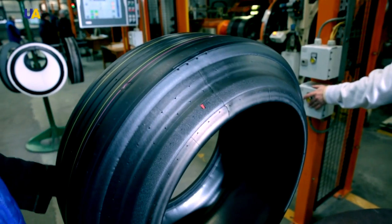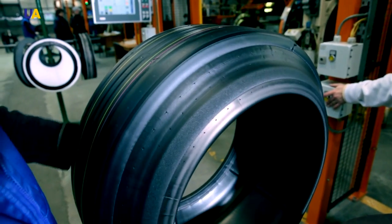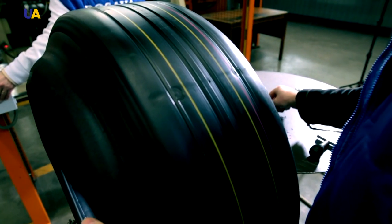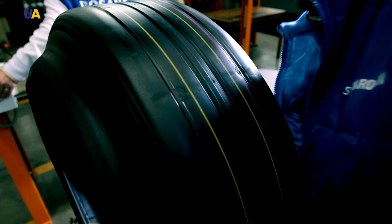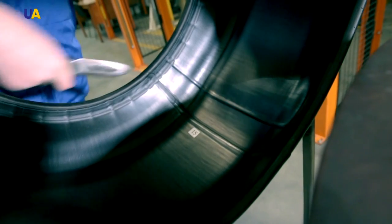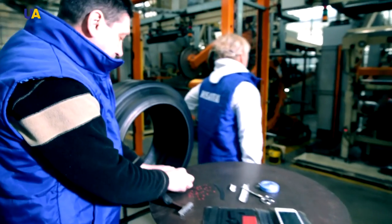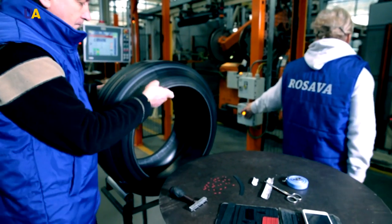If necessary, they're pierced to remove air. Each assembled tire is checked for defects. After checking, the worker exiles his working number and production date to the tire and moves it to the conveyor.